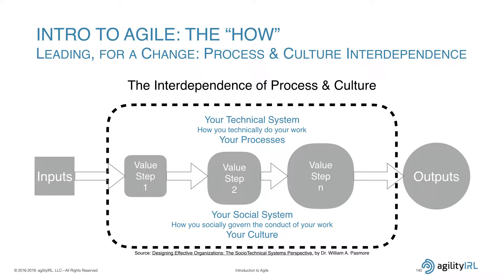He went on to say that the value chain is really a composite of two systems. The first is your technical system — not technology, but how you technically do your work. You insert tab A into slot B to produce widget Q. What we would call processes: manufacturing processes, business processes.